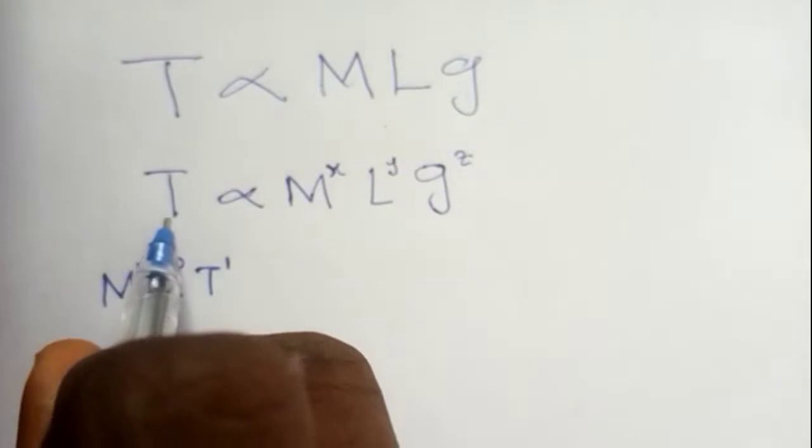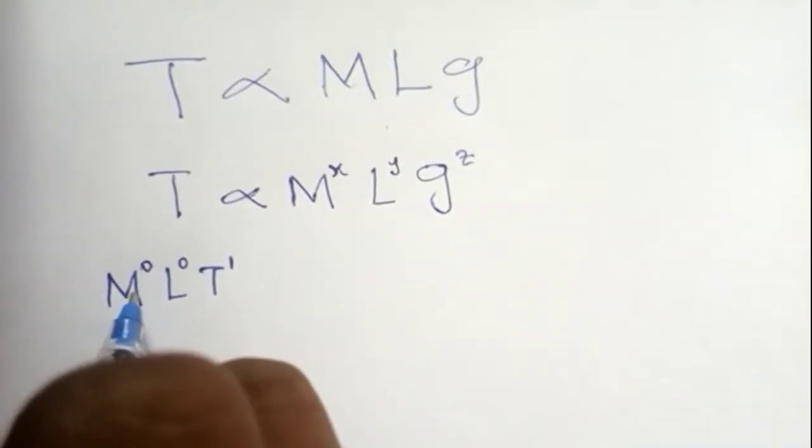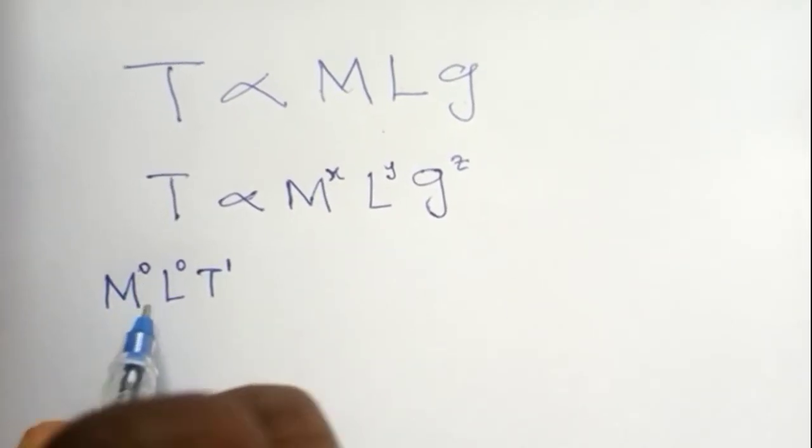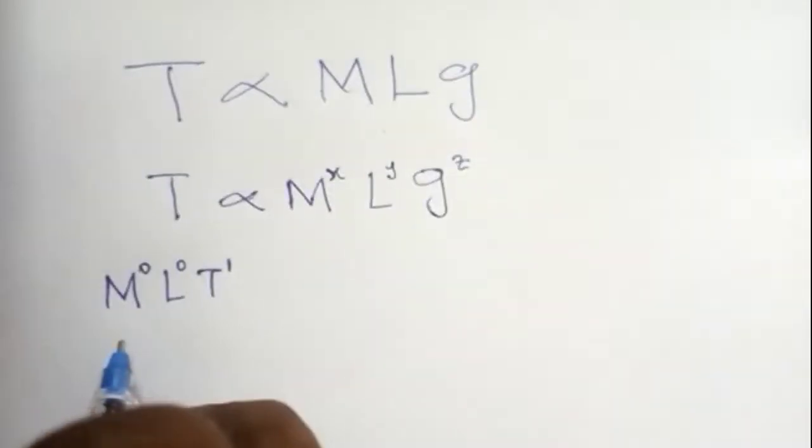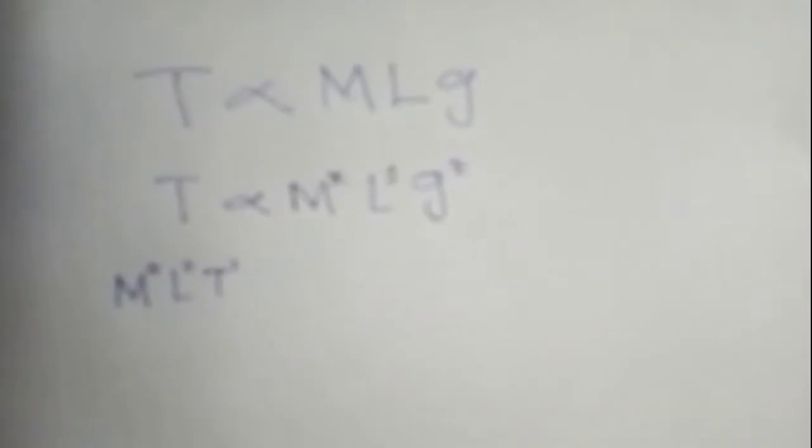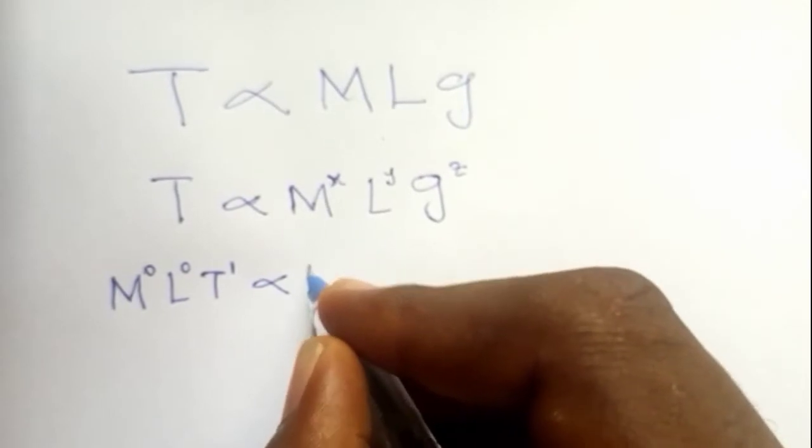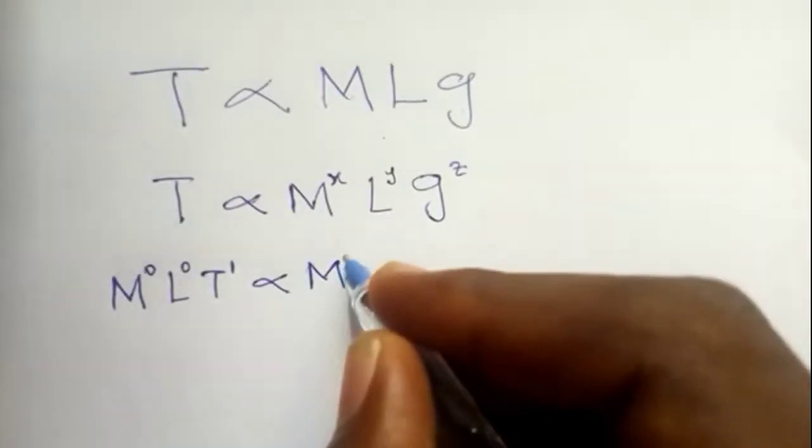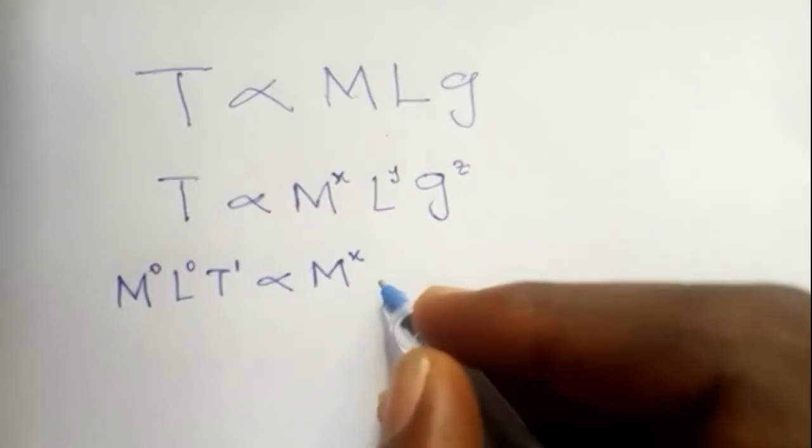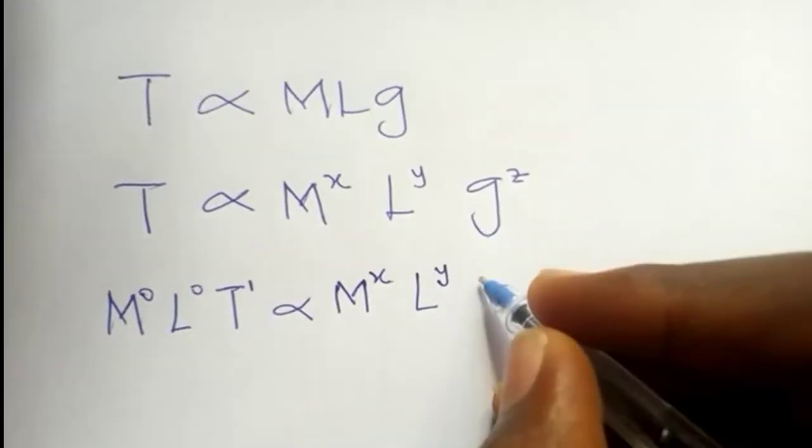M raised to 0 gives you 1, L raised to 0 gives you 1, and 1 times T is equal to T. Then the proportional to M, mass is already in its dimension from the fundamental form. The same goes for the length.